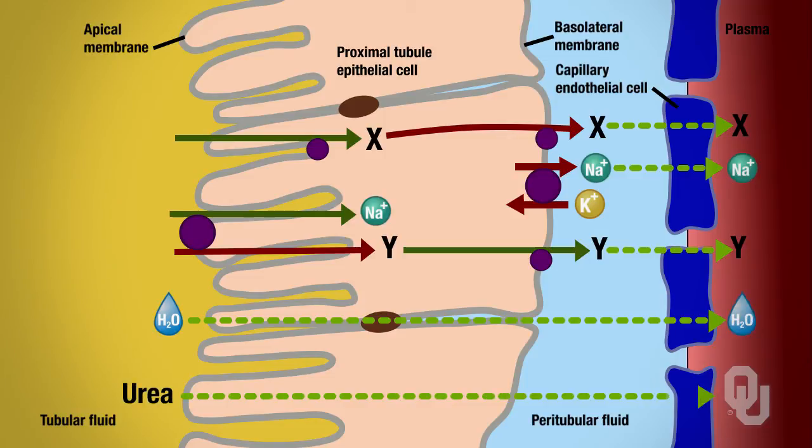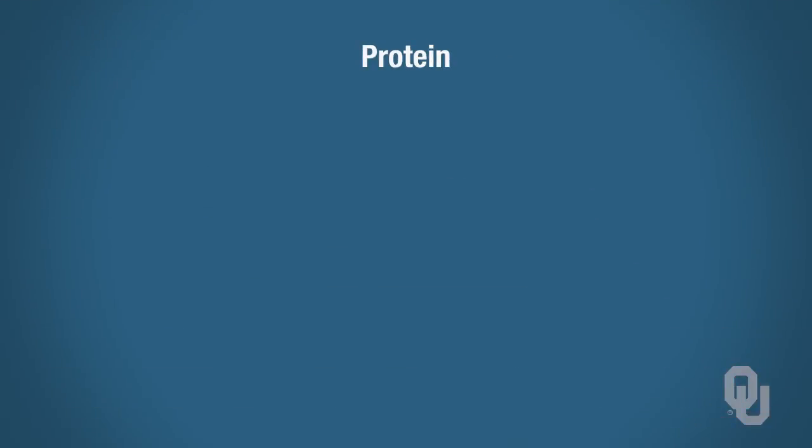Urea—remember what urea is. So if we have a protein, right? So protein consists of amino acids all held together via a peptide bond. And when we undergo proteolysis—proteolysis, remember, is going to give us individual amino acids.